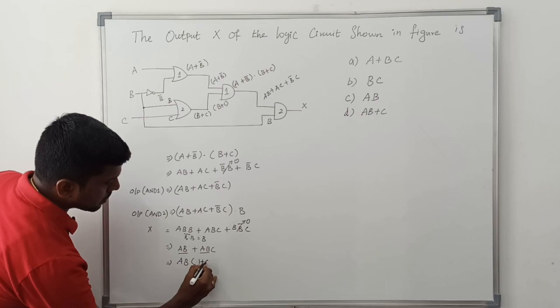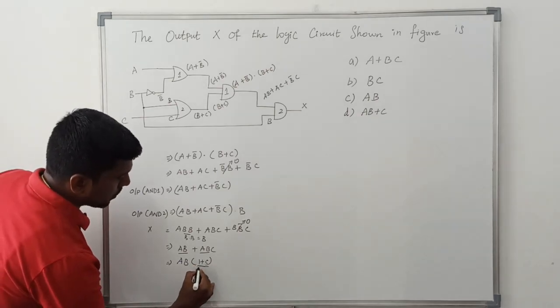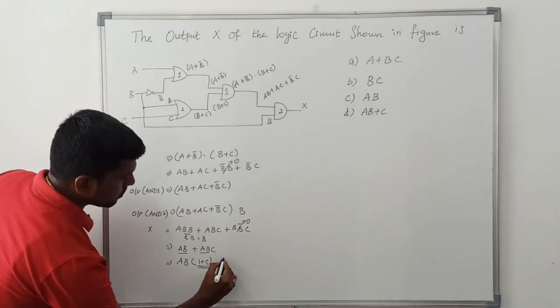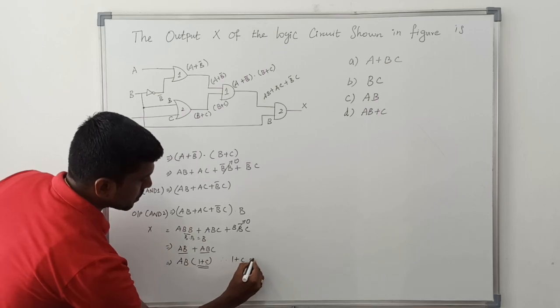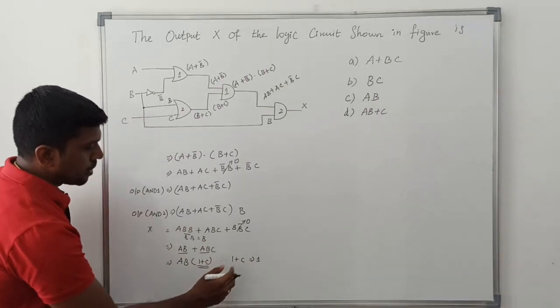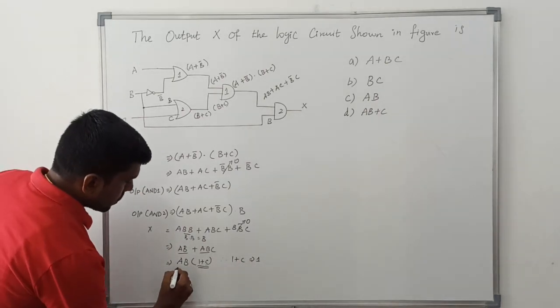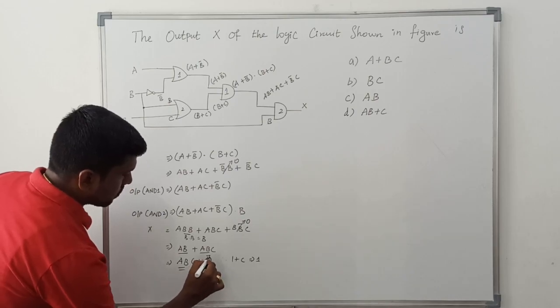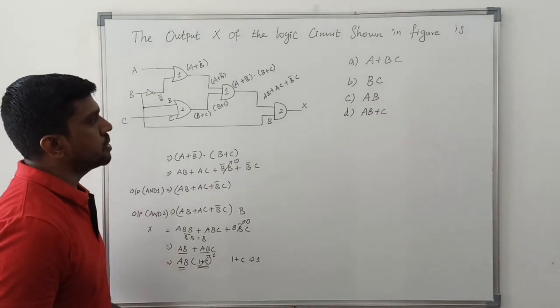AB times (1 plus C). 1 plus C in the sense is equal to 1. In boolean rule, this value equals 1. So the final answer is AB.